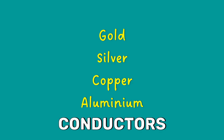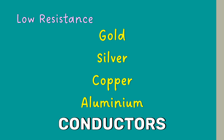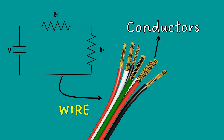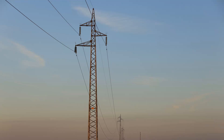As I said earlier, these conductor materials have low resistance. Therefore, while doing our circuit analysis calculations, we neglect the resistance of the wire from our calculations. However, we cannot neglect the resistance of transmission lines while doing power loss and efficiency calculations.